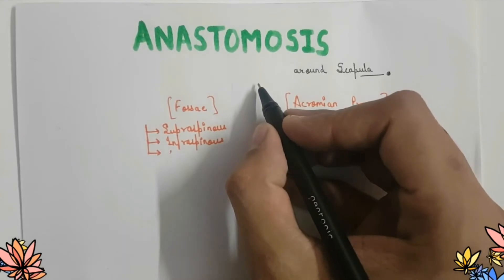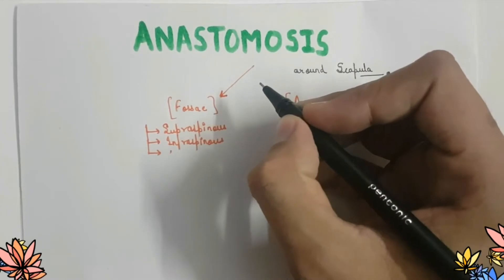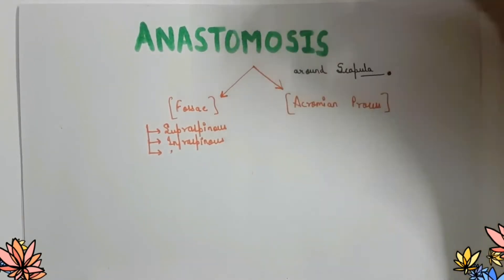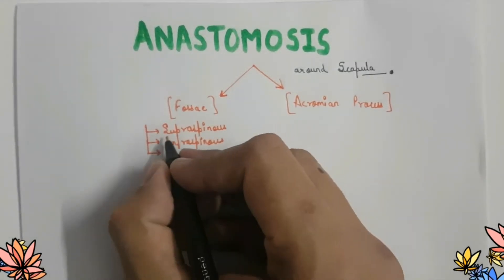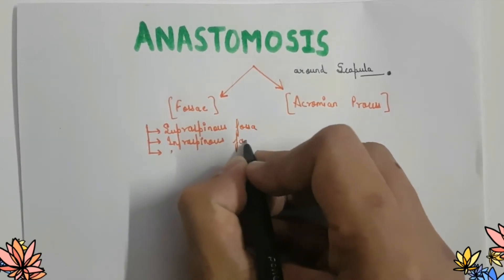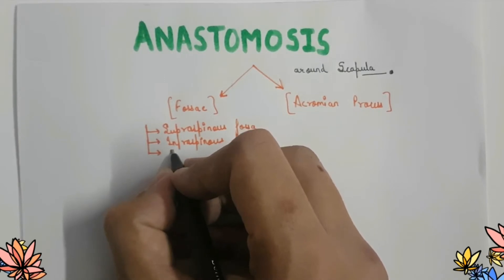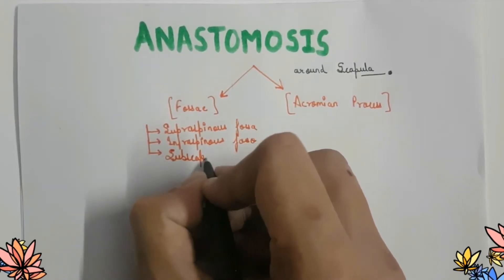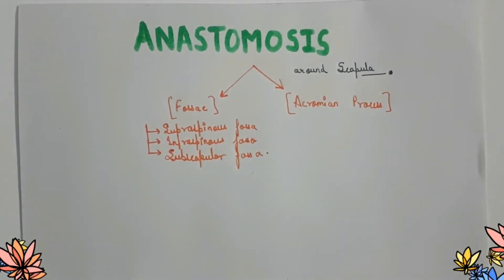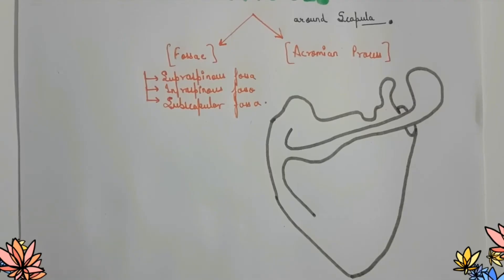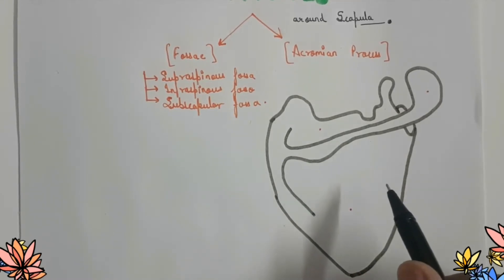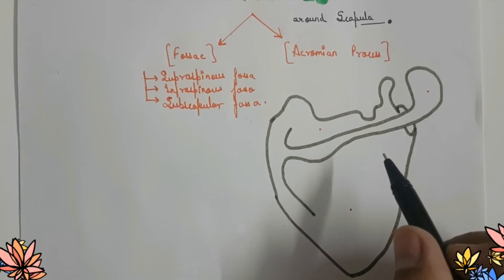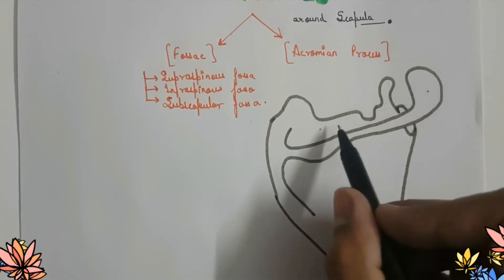Anastomosis around the scapula is divided into two parts: anastomosis over the fossa or the body of the scapula, and anastomosis over the acromion process of the scapula. There are three fossae on the scapula — the supraspinous fossa, the infraspinous fossa, and on the costal or anterior side, the subscapular fossa. Here I have drawn the body of the scapula from the posterior side showing the acromion process and these different fossae.